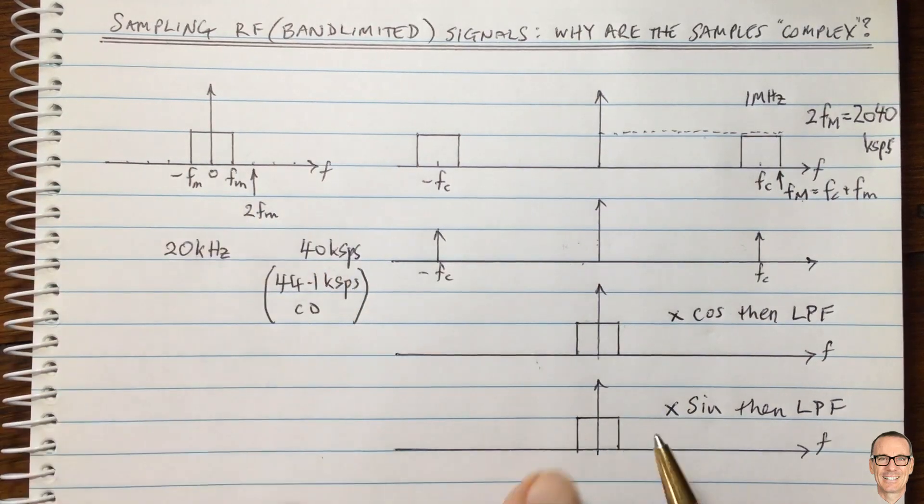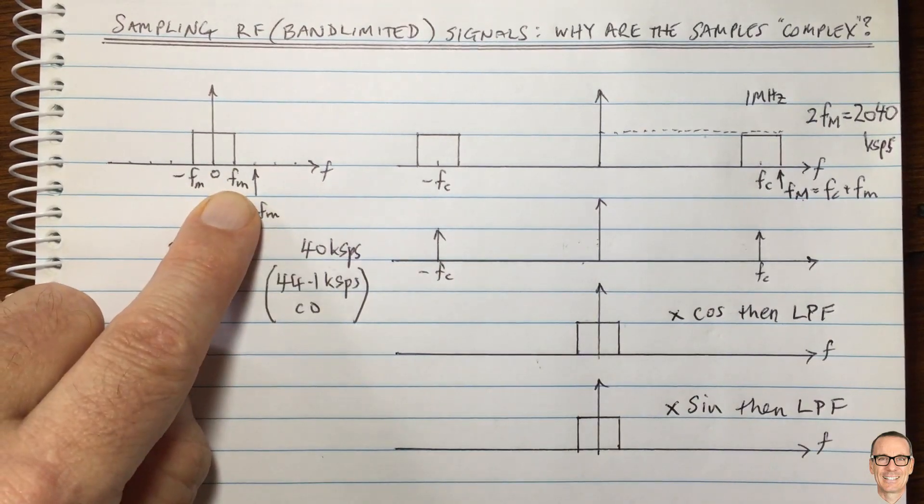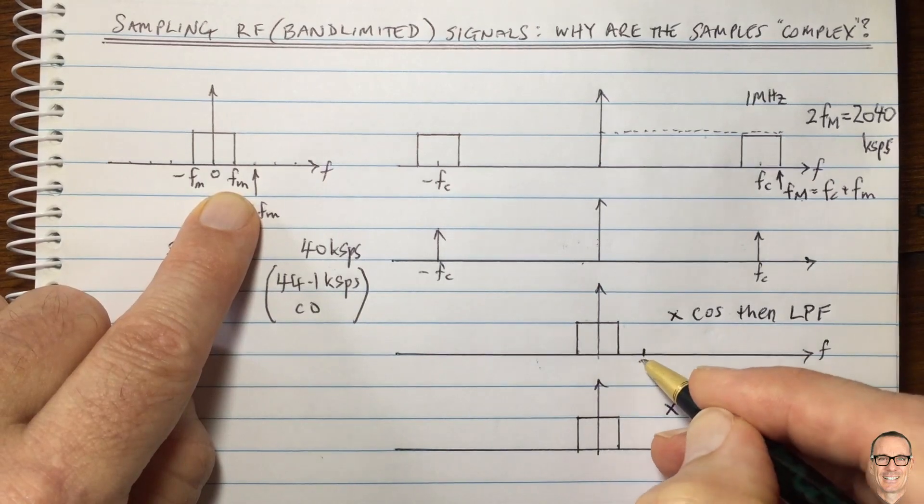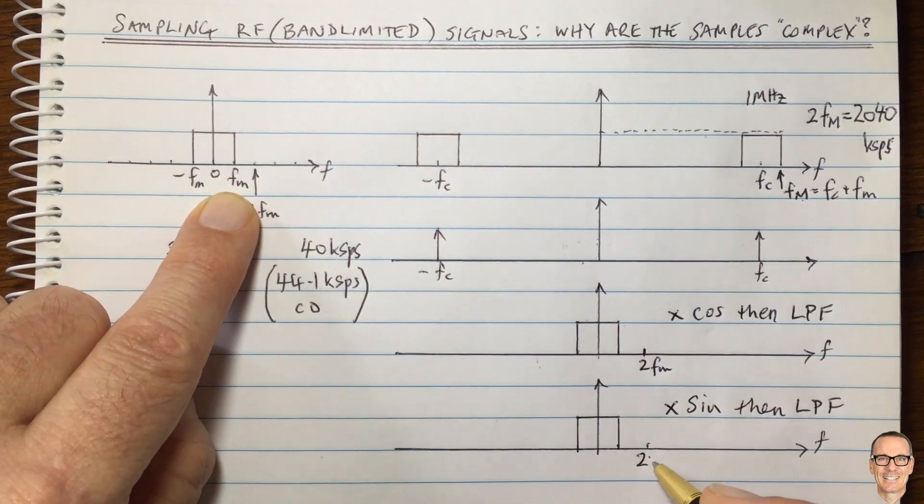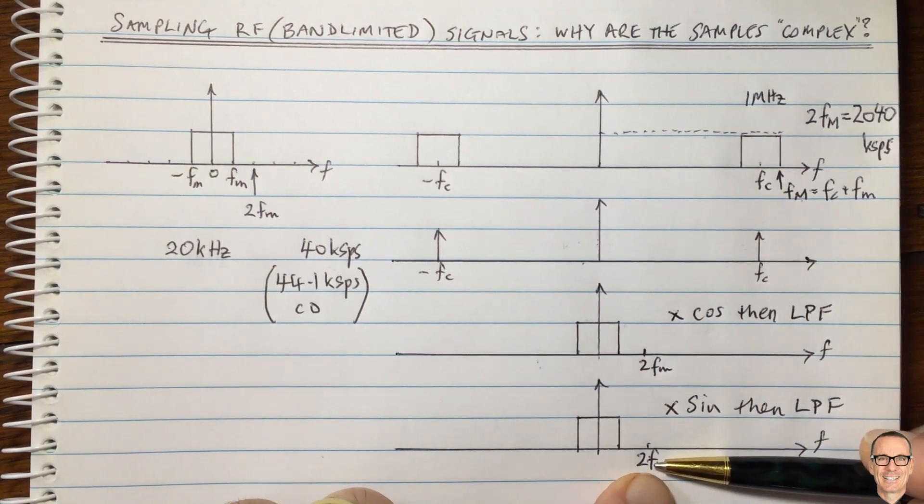We have to do this demodulation for both the cos wave and the sine wave. And here we can now see we've got these signals here, which we can sample just the same as we sampled before. We can sample at twice the FM frequency here from the message.